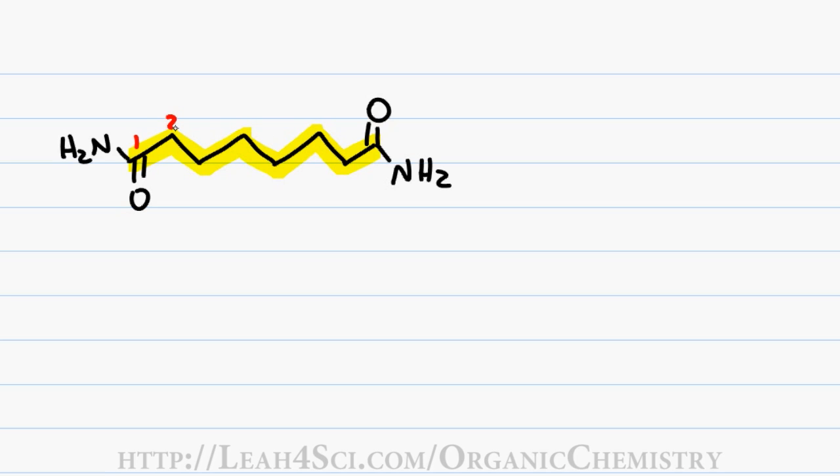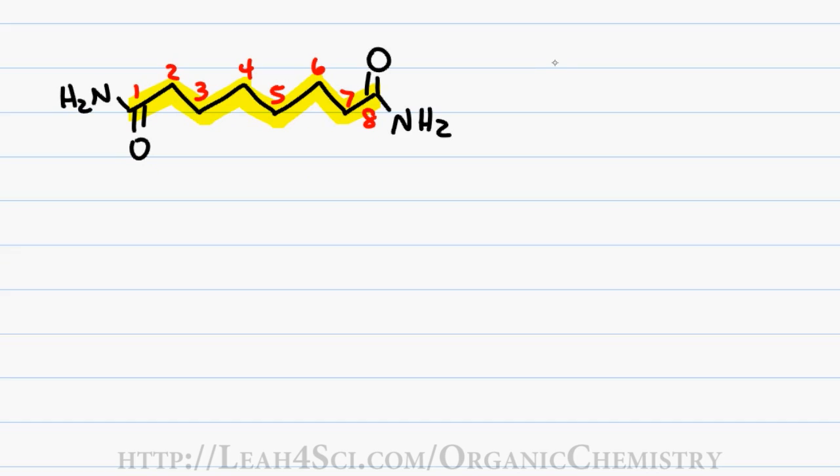Since this is a symmetrical molecule, I can number from the right or the left. I have a total of 8 carbons for a first name of oct and only single bonds in the parent chain for a last name of an. Given that the amide is a terminal functional group, if we have two on the molecule, we assume it shows up on the first and last carbon and so both numbers can be omitted.